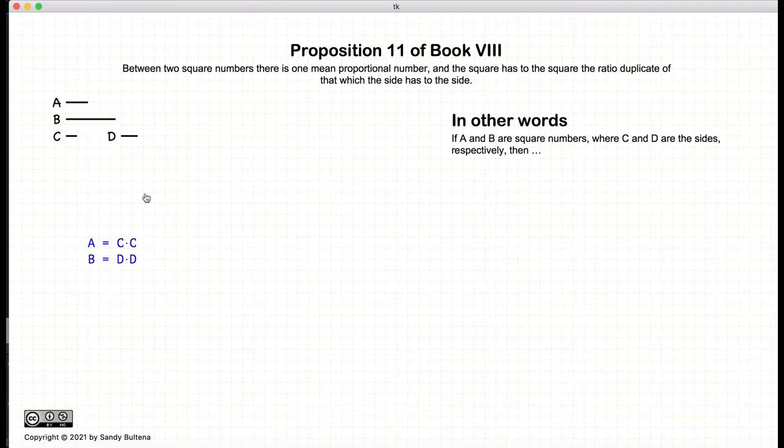So what is this proposition? This proposition says that if you have two square numbers, there is one and only one mean proportional number, and the two squares are the duplicate ratios of the sides. In other words, if we have two squares, a and b, and the sides are c and d respectively.